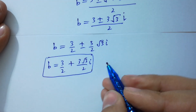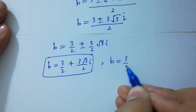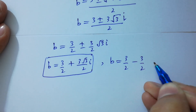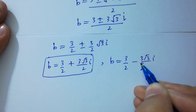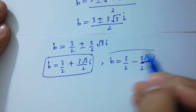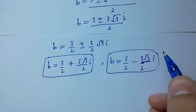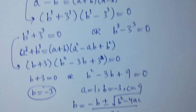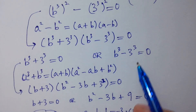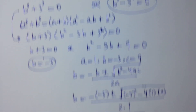And the third solution is B equals 3/2 minus 3√3/2 · i. Next, we solve B³ minus 3³ equals 0.